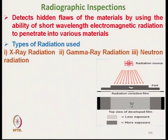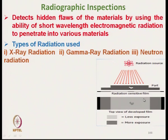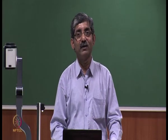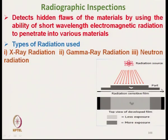This is the schematic diagram. Here the source of radiation like X-ray or gamma ray — the material is projected here. This is the material part where the white portion is showing the defective portion. This short wavelength electromagnetic radiation will pass through the composite material and on the other side there will be a radiation sensitive film. In the case of X-ray, an X-ray film is used. Similarly, here a radiation sensitive film is used.